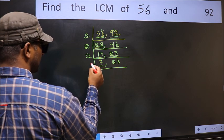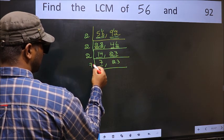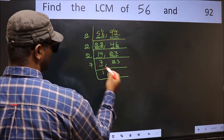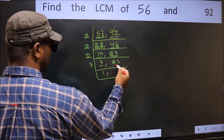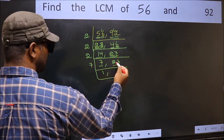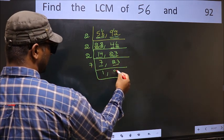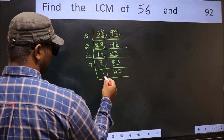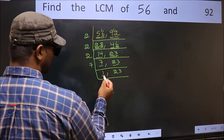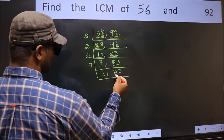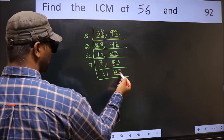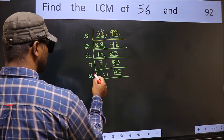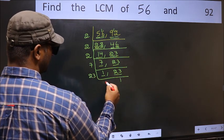Now here we have 7. 7 is a prime number, so 7, 1's — 7. So 7÷7=1. The other number 23 is not divisible by 7, so we write it down as it is.